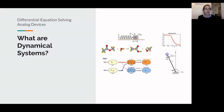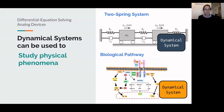There are a couple of interesting use cases for dynamical systems. The first is you can use them to get a deeper understanding of a physical phenomenon. You can observe some physical phenomenon, mathematically model it using a dynamical system, and then execute that dynamical system under a variety of different conditions to gain a deeper understanding of the phenomenon you're studying.